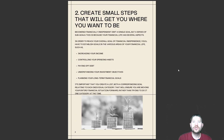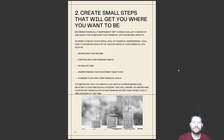Create small steps that will get you where you want to be. Becoming financially independent isn't a single goal, but a series of sub-goals. Your financial life has several aspects, and in order to reach your overall goal of financial independence, you'll have to establish goals in various areas — such as increasing your income, controlling your spending habits, paying off debt, understanding your investment objectives, and planning your long-term financial goals. It's important to create a list with a corresponding goal for each individual category, ensuring you move your entire financial situation forward rather than tackling one category at a time.